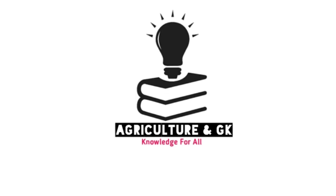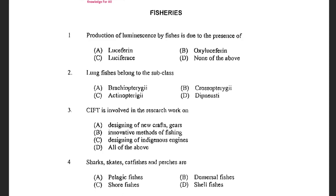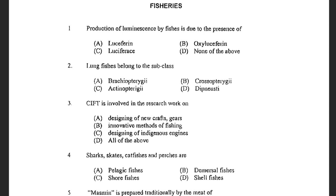Our first question is: The production of luminescence by fish is due to the presence of — options are Luciferin, Oxyluciferin, Luciferase, and none of the above. The answer is Luciferin. Because the chemical Luciferin works with the enzyme Luciferase. Luciferin is an indole derivative consisting of Dutamine, Arginine and Isoleucine amino acids, and the most common Luciferin is coelenterazine. When Luciferin reacts with Luciferase, it forms Oxyluciferin which emits light.